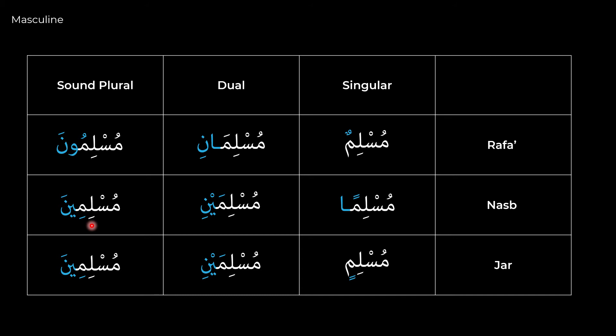It's important to keep in mind that just as all isms were non-specific by default, and just as they were all masculine by default, by default their status is rafa. Something will have to come in to change it to make it nasab or jar. That's a critical point to remember.